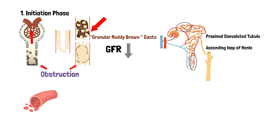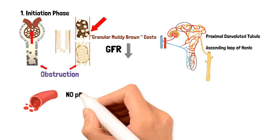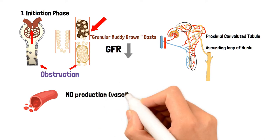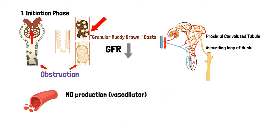Not just renal tubular cells, but vascular cells are also affected by ischemia. The endothelial cells lining the afferent arterioles are also damaged. Nitric oxide, produced from these endothelial cells, is a potent vasodilator that increases blood flow and delivers more oxygen to cells. However, ATN decreases nitric oxide production, impairing vasodilation and further reducing renal blood flow to the glomerulus, decreasing the GFR even more.